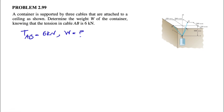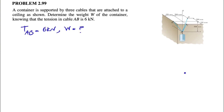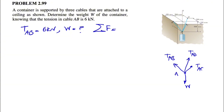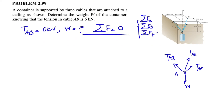So if we want to draw the free body diagram for point A, we have the weight of this container, and we have three different cables which we can call TAC, TAD, and TAB. Since the system is in equilibrium, the sum of all forces has to be zero. We have a 3D question, which means we have sum of all forces in X, in Y, and in Z equal to zero, because of the equilibrium condition.